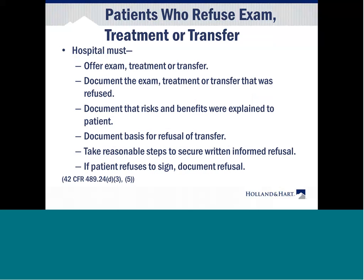Tell the patient what you want to do and document what you offered. Document that the risks and benefits were explained to the patient. Document the basis for refusal of the transfer. If the patient doesn't want to do something because they don't want to pay the bill, document that you told the patient you're obligated to provide the care regardless of their ability to pay. Take reasonable steps to secure written informed refusal. If the patient refuses to sign, document why. The bottom line is do an appropriate AMA.